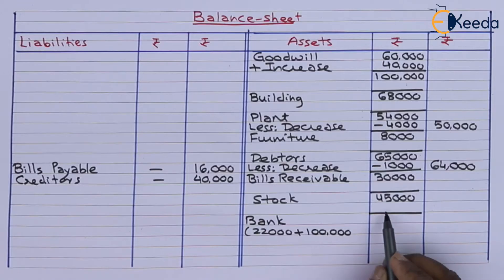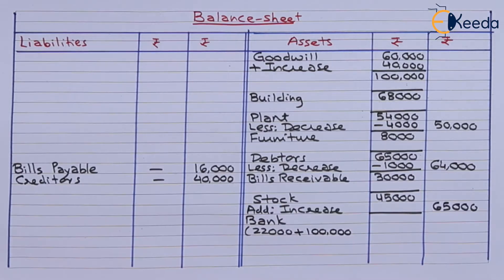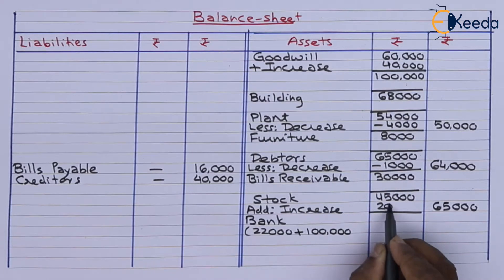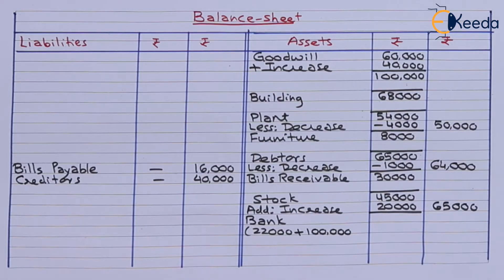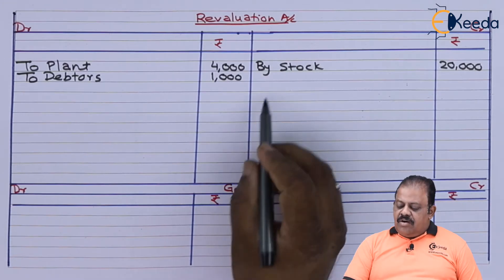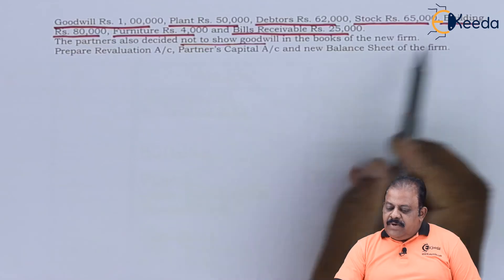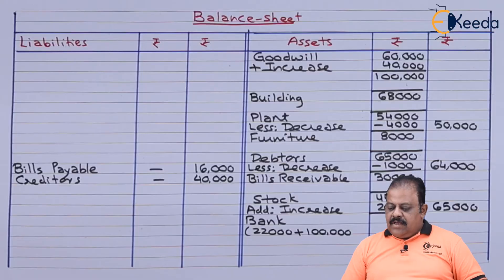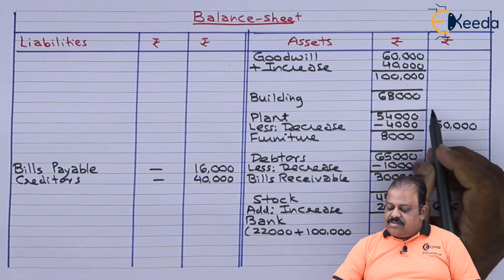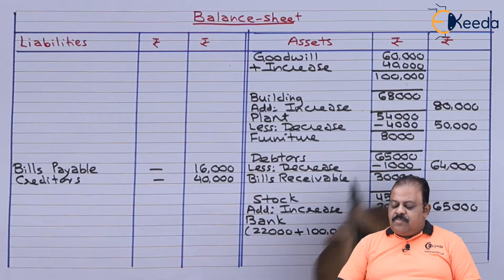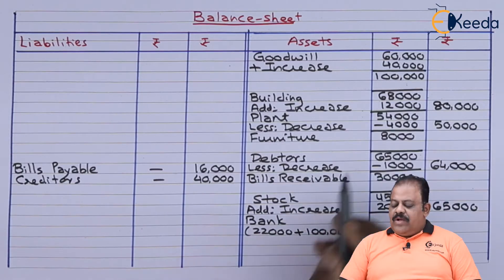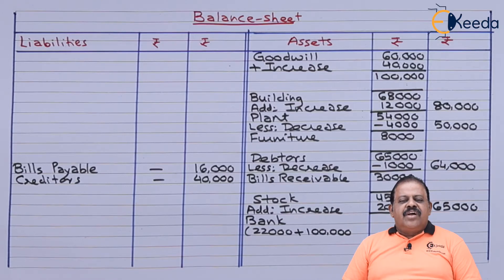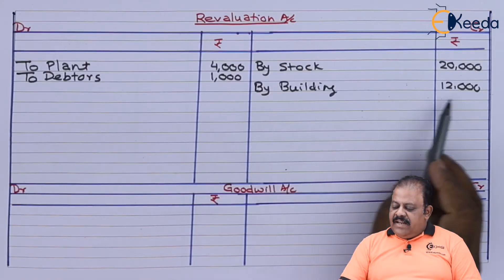Stock revalued at 65,000. Book value is 45,000, so there is an increase of 20,000. Revaluation account credit side by stock 20,000. Building revalued at 80,000. Book value is 68,000, so there is an increase of 12,000. Revaluation account credit by building 12,000.